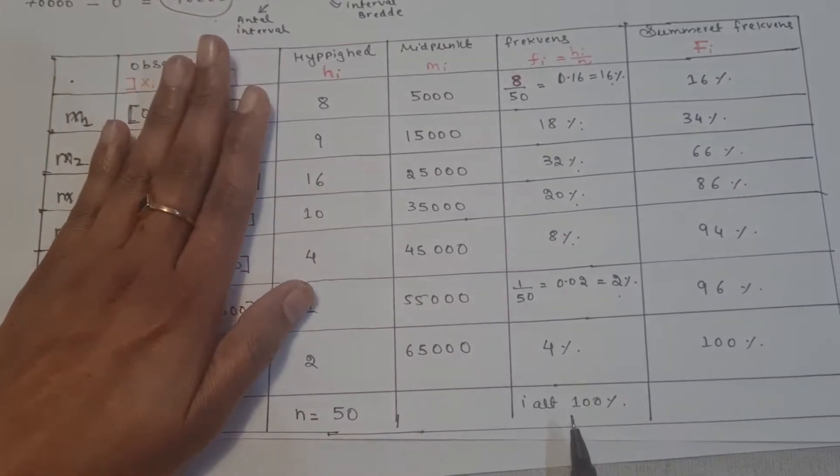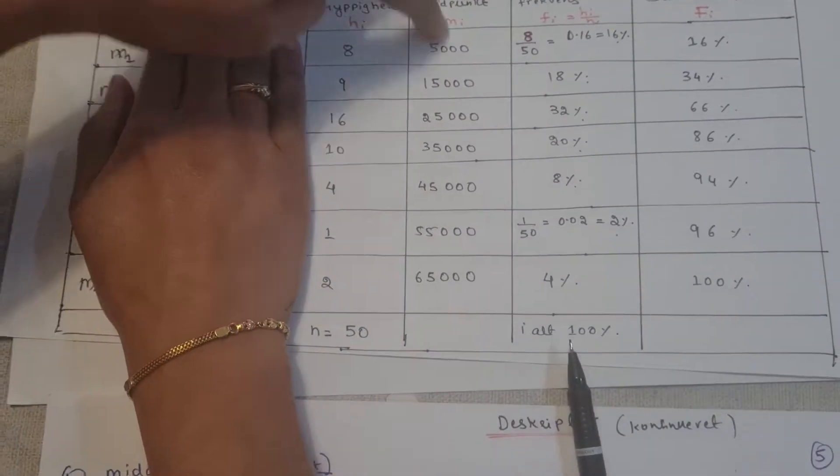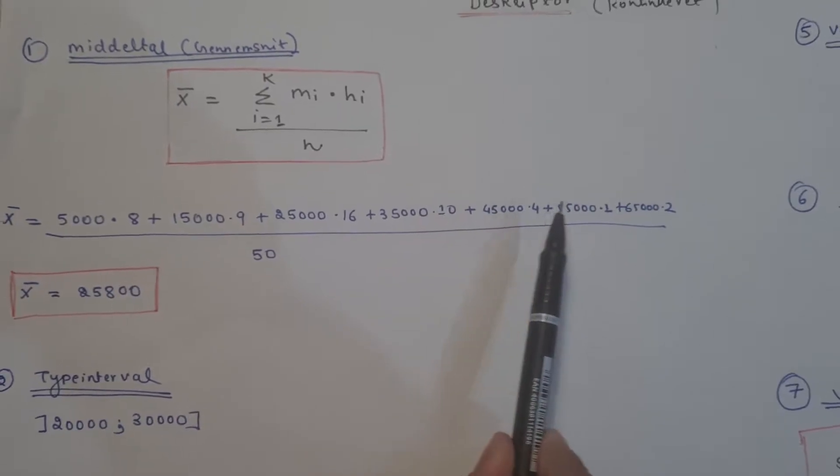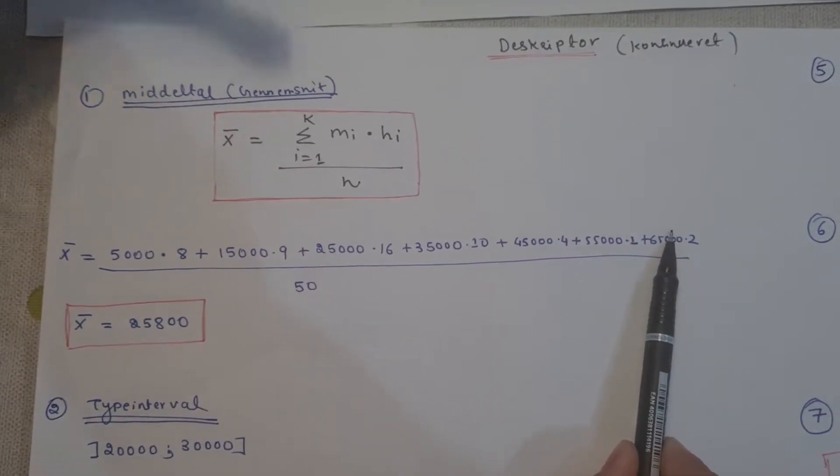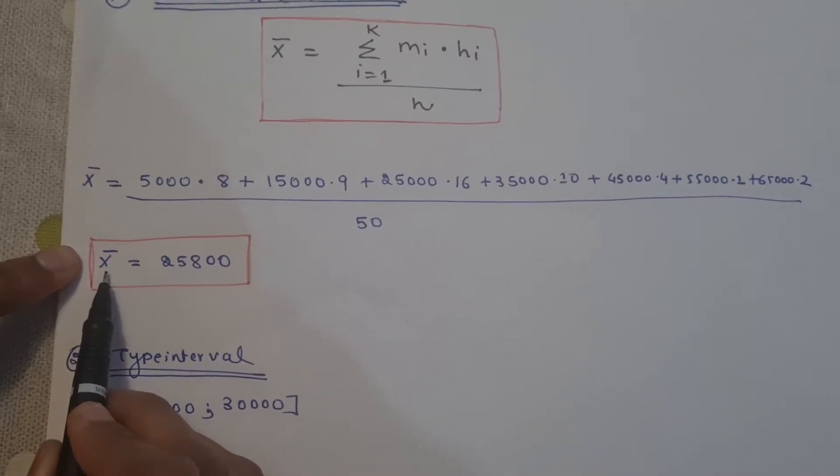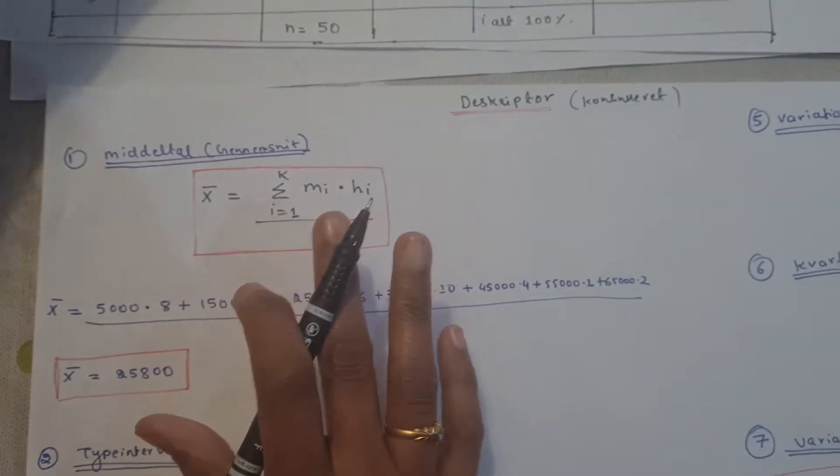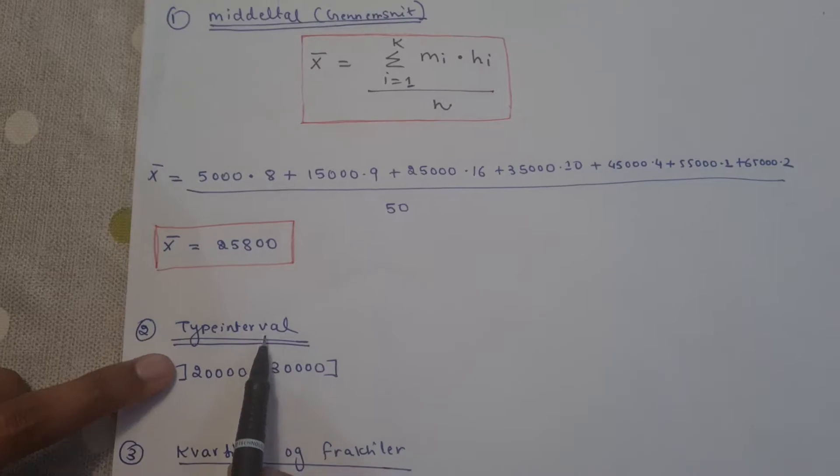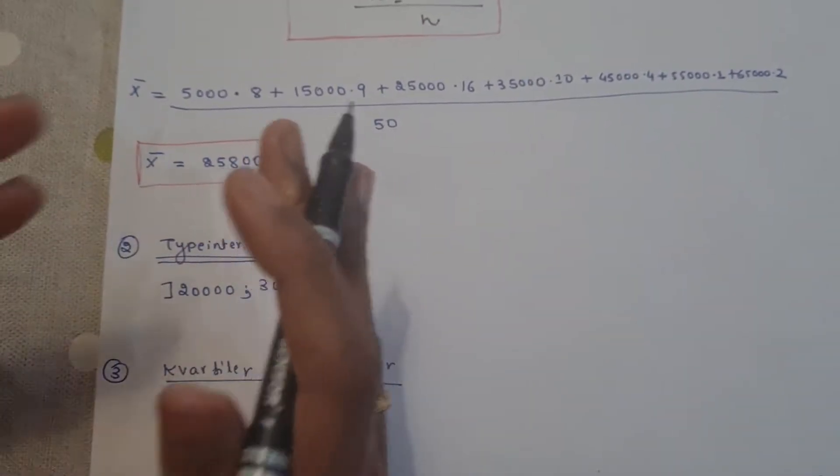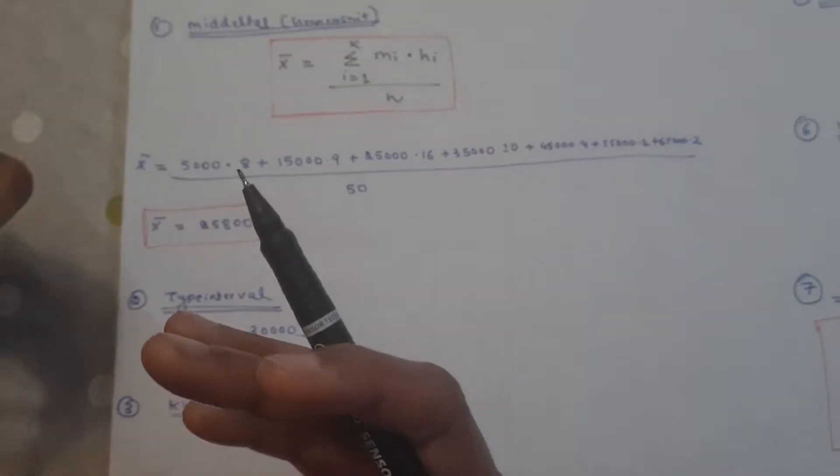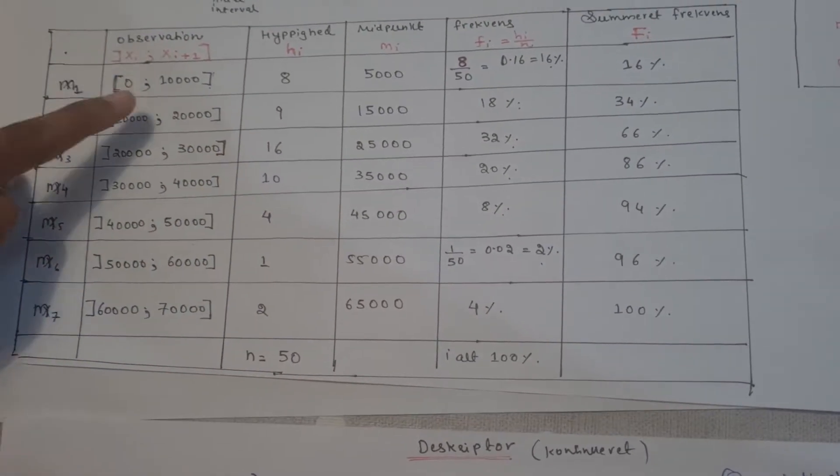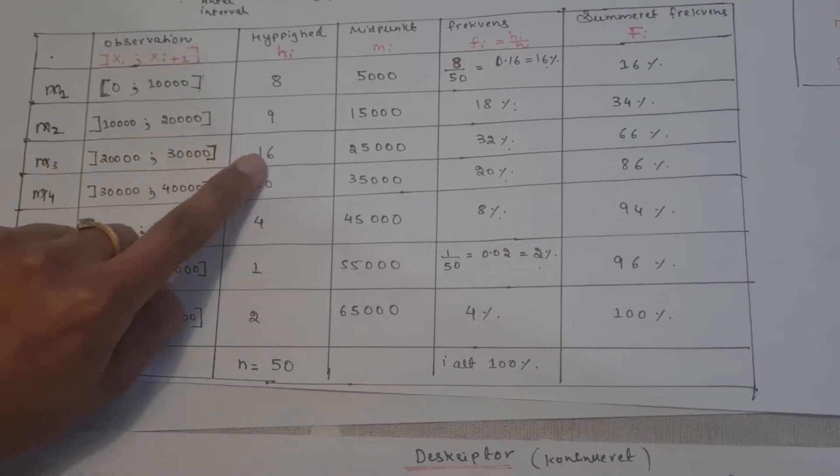How we do this description is: for now we have the one here, M_i equals sum X_i. So therefore you have, they have M_i. So the intervals, for the interval, the midpoint, so the genomsnit sum.